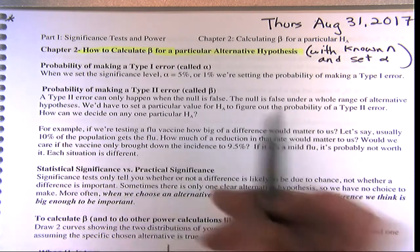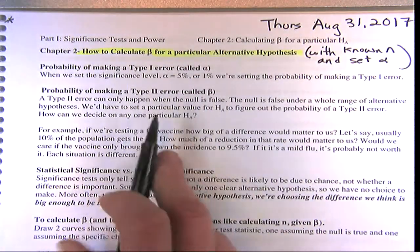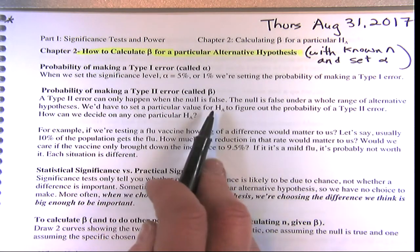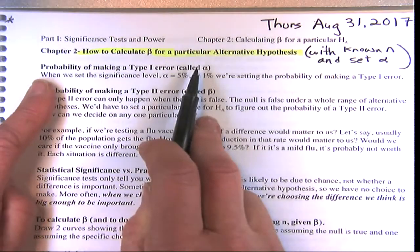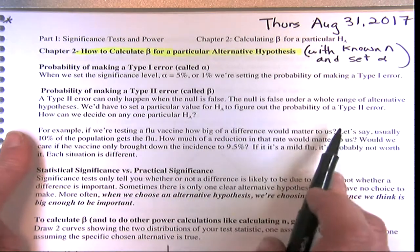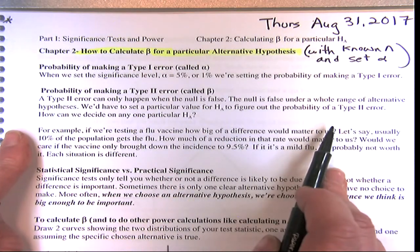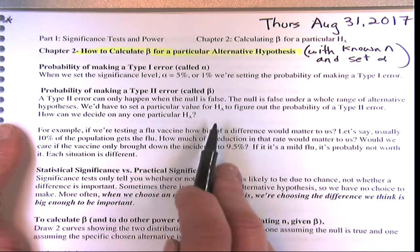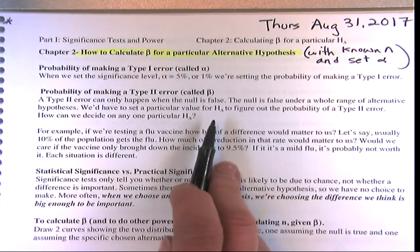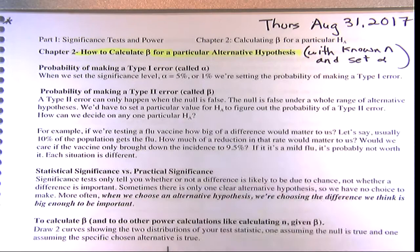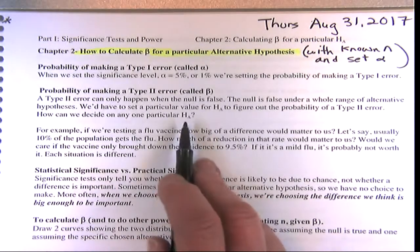Type 1 error is called alpha. Type 2 error probability is called beta, and that happens only when the alternative is true. The Type 1 error happens when the null is true. We have to pick out a specific alternative — we can't just say 'when the null is false' because there's a whole range, so we have to hypothesize a particular value, just like we do for the null.